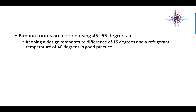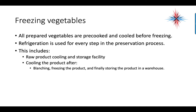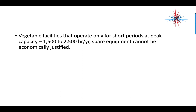Banana rooms are cooled using 45 to 65 degree air, keeping a design temperature difference of 15 degrees and a refrigerant temperature of 40 degrees. For freezing vegetables, all prepared vegetables are pre-cooked and cooled before freezing. Refrigeration is used for every step: raw product cooling and storage, cooling the product after blanching, freezing the product, and storing it in a warehouse. Vegetable processing facilities that operate only for short periods — such as orange and fruit processing plants in the south — may only operate 1,500 to 2,500 hours per year.